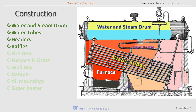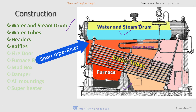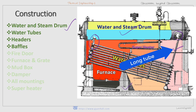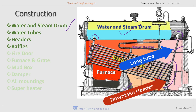The steam and water drum is one of the important parts of the Babcock and Wilcox boiler. It is a horizontal axis drum containing water and steam, and about half of the drum should be occupied by steam. Below the drum there is a short tube connected to the uptake header, also called the riser. There is also a long tube which connects the steam drum to the downtake header.